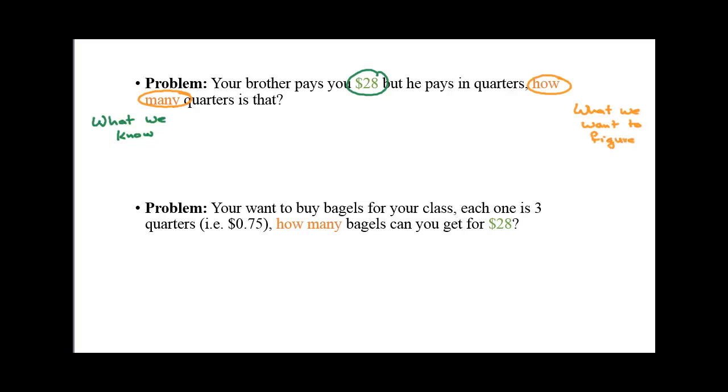So, when I read this question, I'm looking for what do we know, and what are we trying to find out? Your brother pays you twenty-eight dollars. We start with twenty-eight dollars. And right now, the units is dollars. But, when everything is said and done, I'm asking for how many quarters.